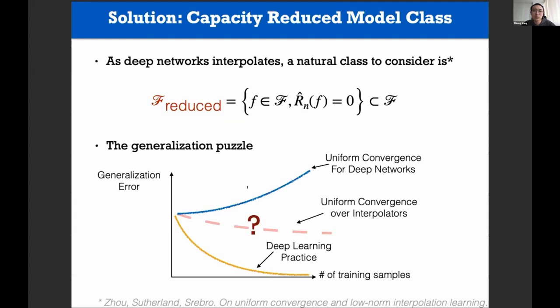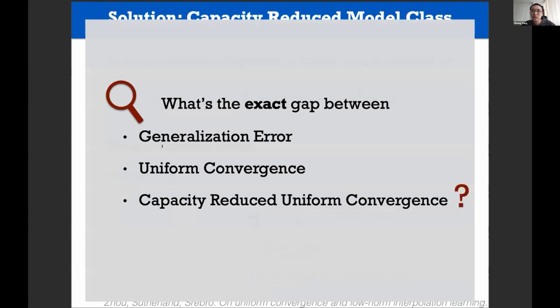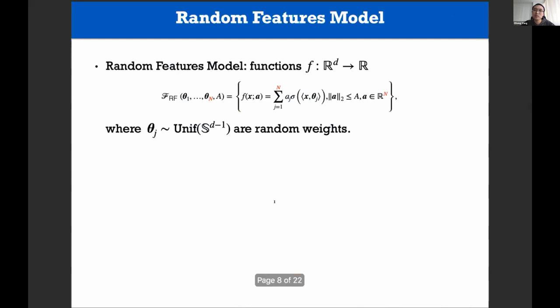One concrete mode of uniform convergence failure is described by Nagarajan and Kolter: in practice for deep networks, with more training samples the generalization error decreases, but uniform convergence actually increases with the number of samples. One remedy is to consider a smaller, capacity-reduced class of functions and take the supremum over that smaller set to get a tighter bound. As deep networks interpolate, a natural class is the set of interpolating solutions — functions that could interpolate the training set.